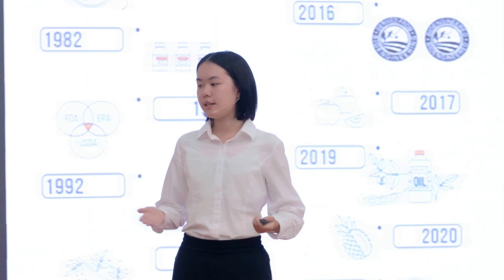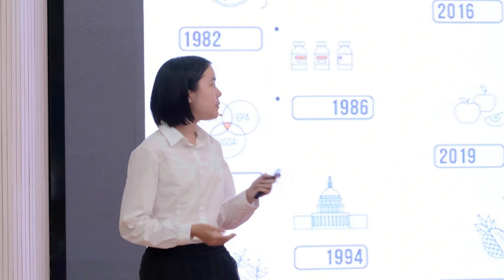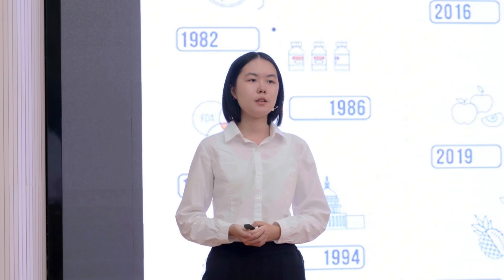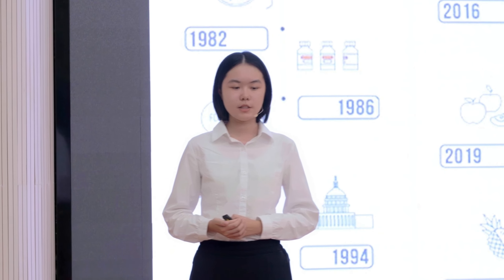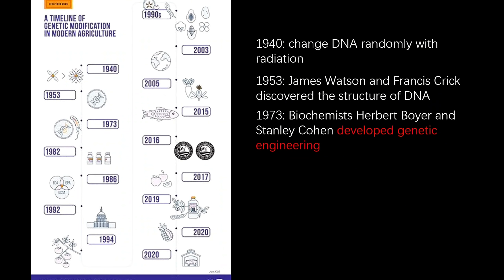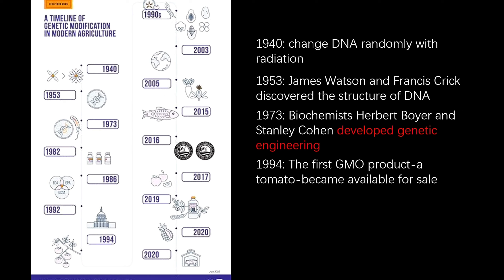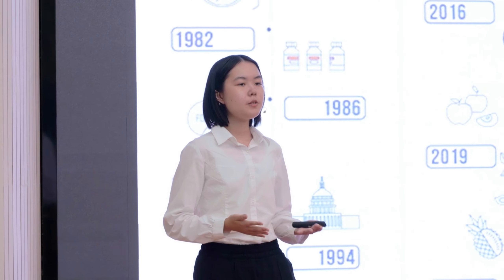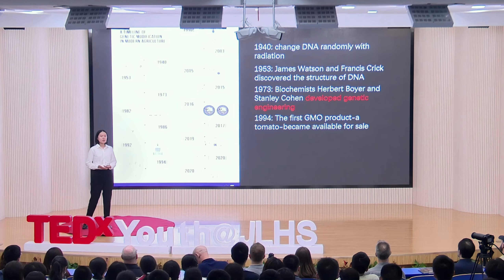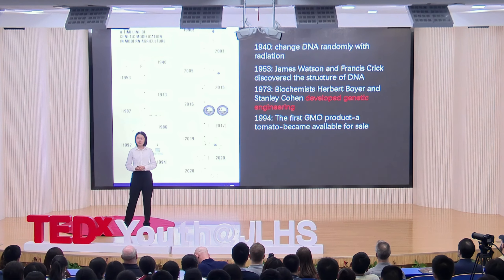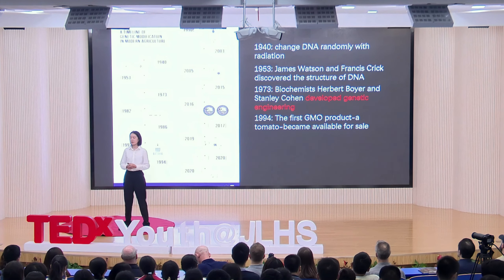The situation began to change when, in 1953, James Watson and Francis Crick discovered the structure of DNA, and thus opened up the possibility for humans to manipulate genes. In 1973, Herbert Boyer and Stanley Cohen developed genetic engineering, and in 1994, the first GMO product — a tomato — became available for sale. These two milestones mark the official beginning of modern genetic modification. So as we can see, that's 50 and 30 years ago, which is quite a long history for technology.